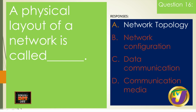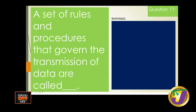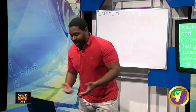Question seventeen: a set of rules and procedures that govern the transmission of data are called A) emails, B) modems, C) bulletin, or D) protocols. The answer is protocols. Even if you just use word association, you can guess that answer. Emails and modems could never be it — modems are physical devices that used to translate digital to analog signals when connecting a telephone line to a computer.